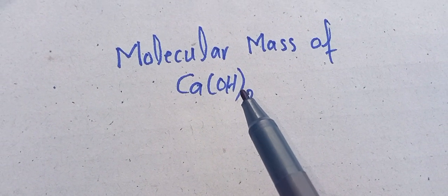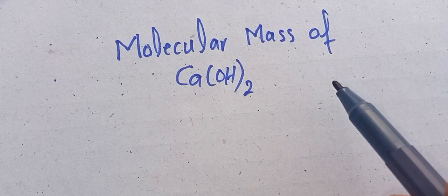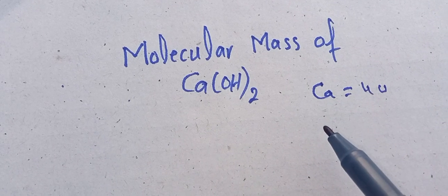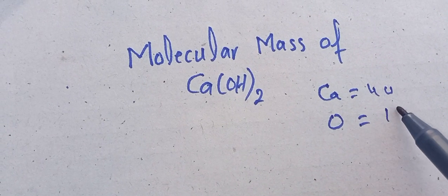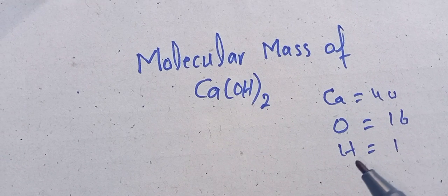First, we need to understand the atomic masses of different atoms: calcium, which is 40 grams per mole; oxygen, which is 16 grams per mole; and hydrogen, which is 1.008 grams per mole.